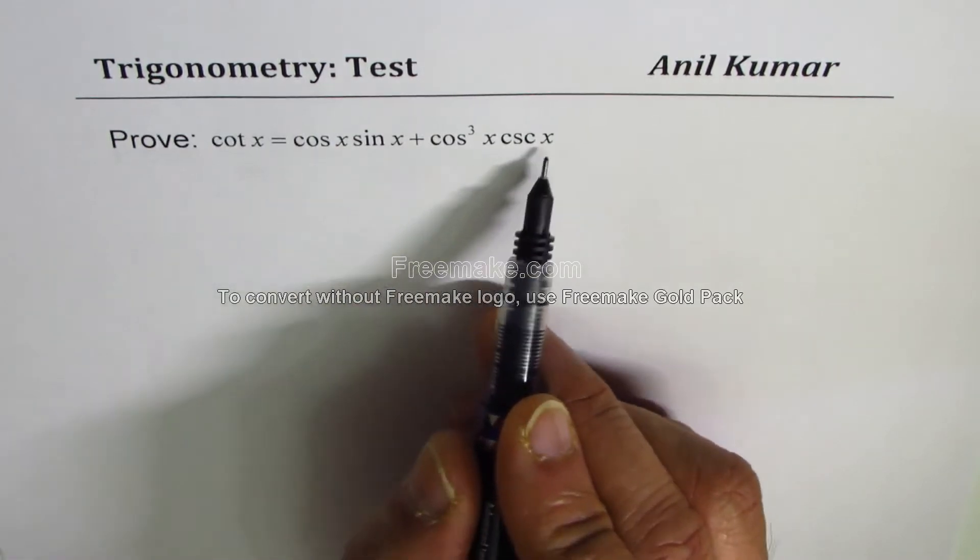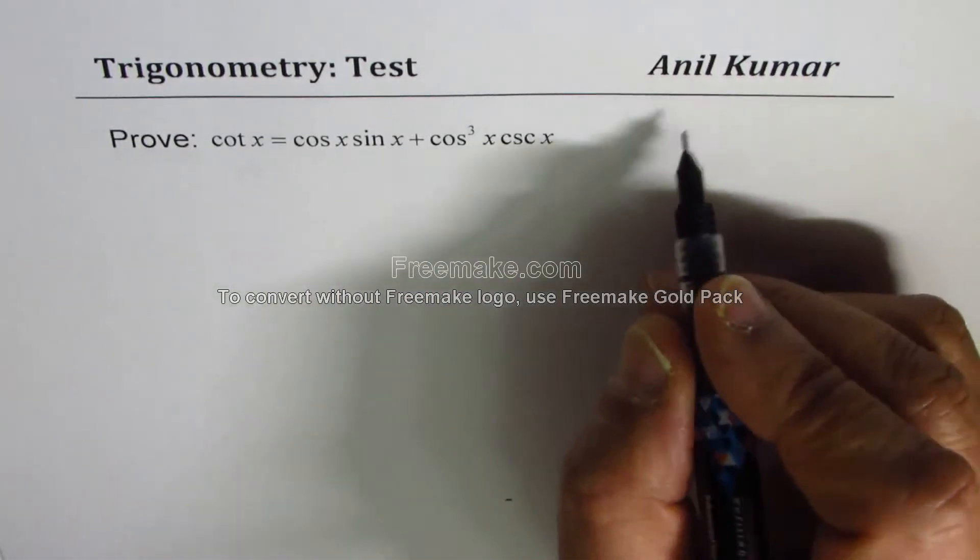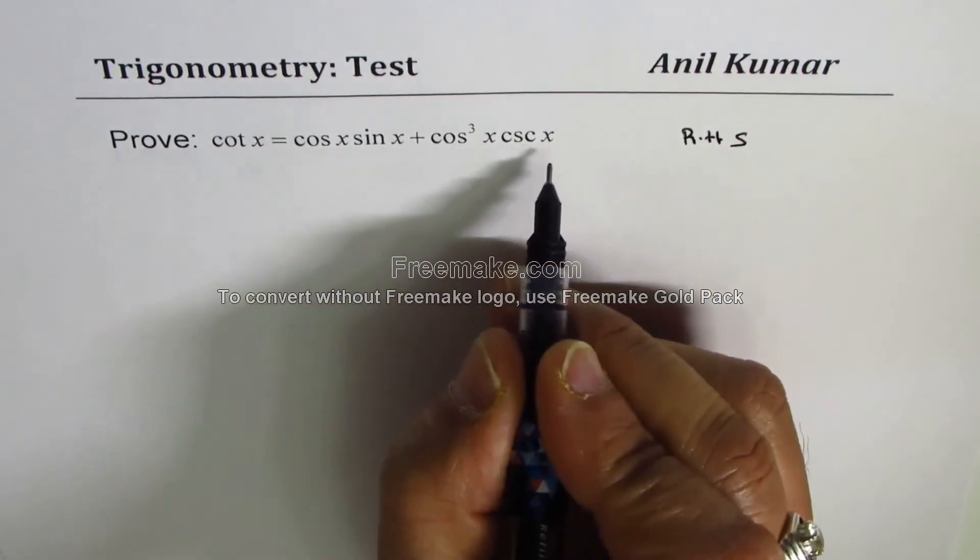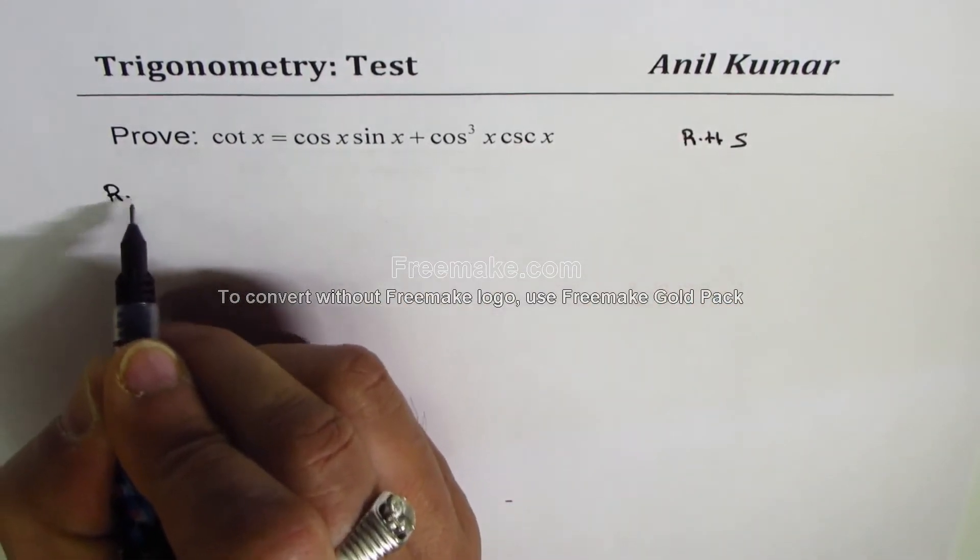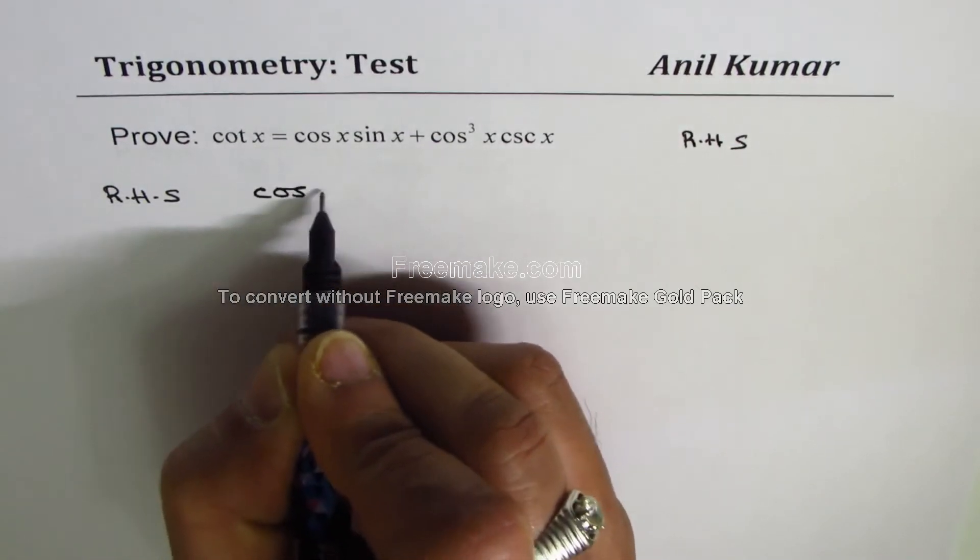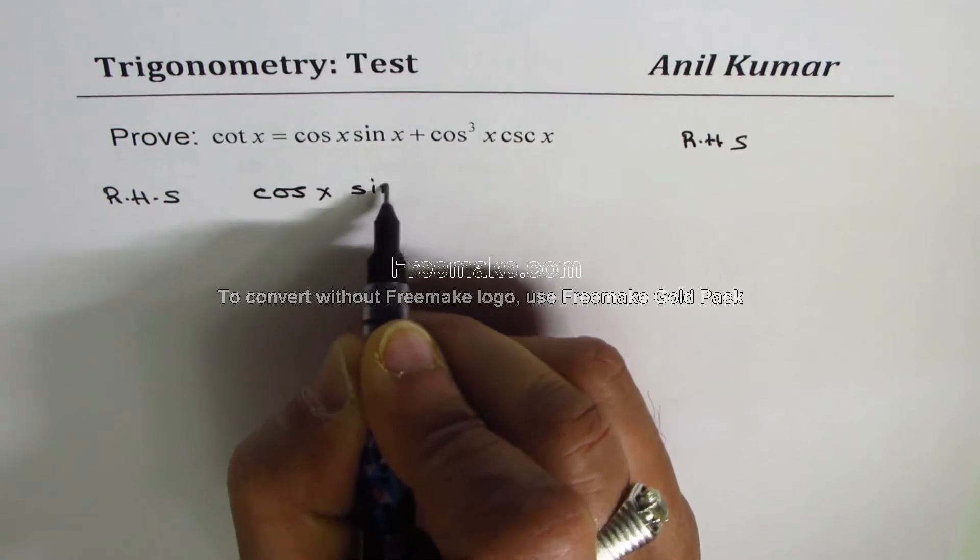To prove this identity, we should start with the right-hand side since that could be simplified. So the right-hand side is cos x sin x plus cos³ x csc x.